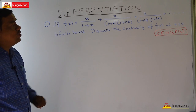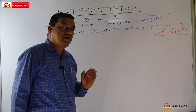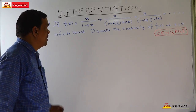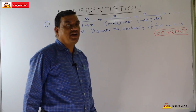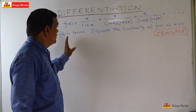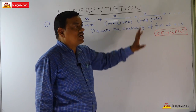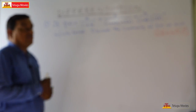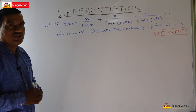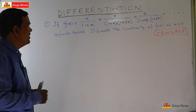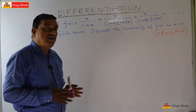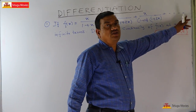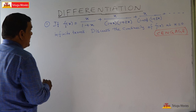At x=0 we have to find out the left-hand derivative and right-hand derivative. But before that, since this is an infinite series, we first need to simplify the function. To simplify it, we first find the nth term.